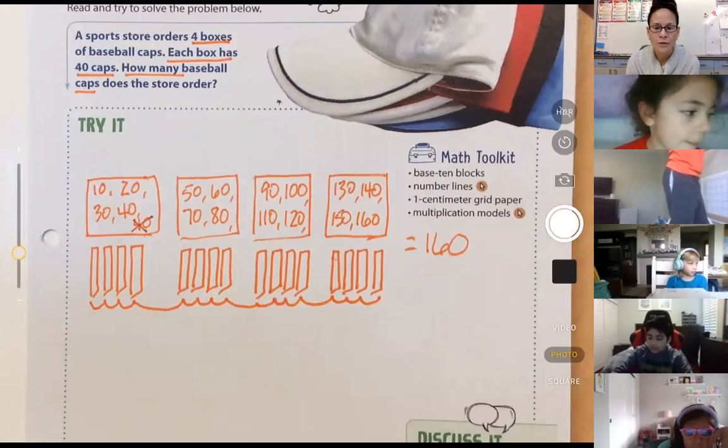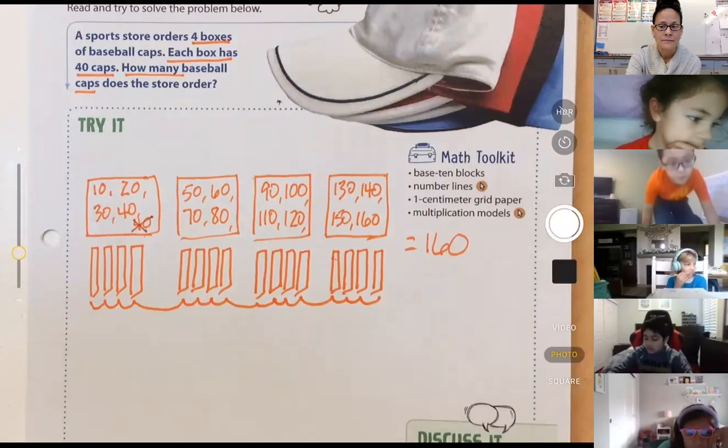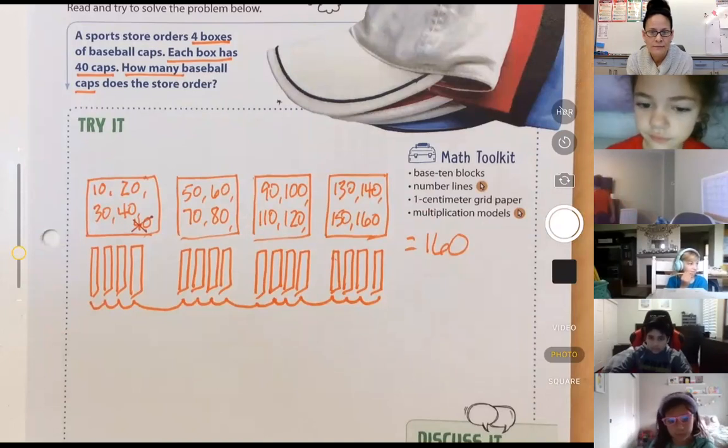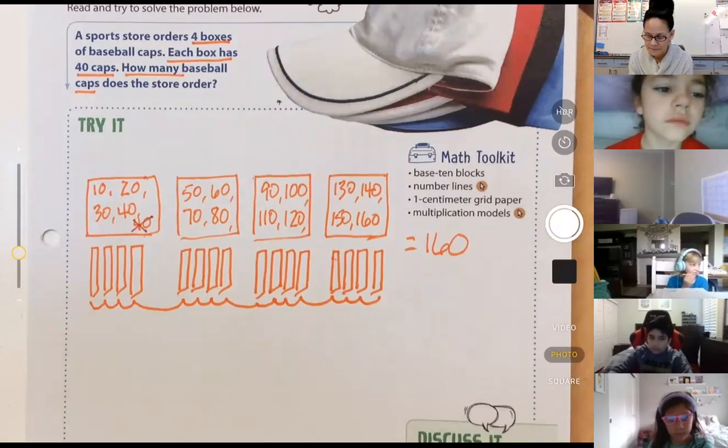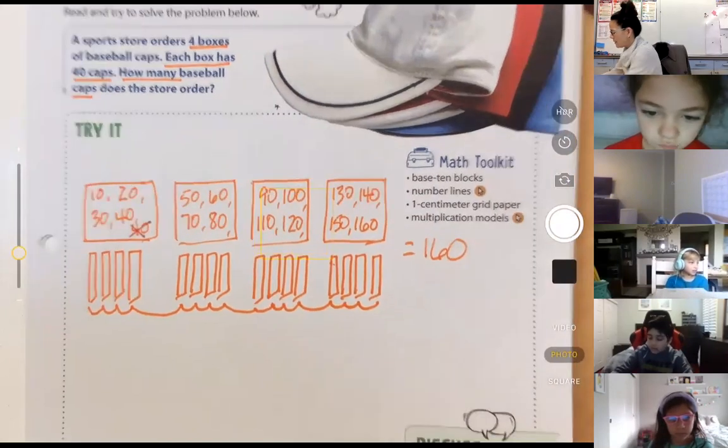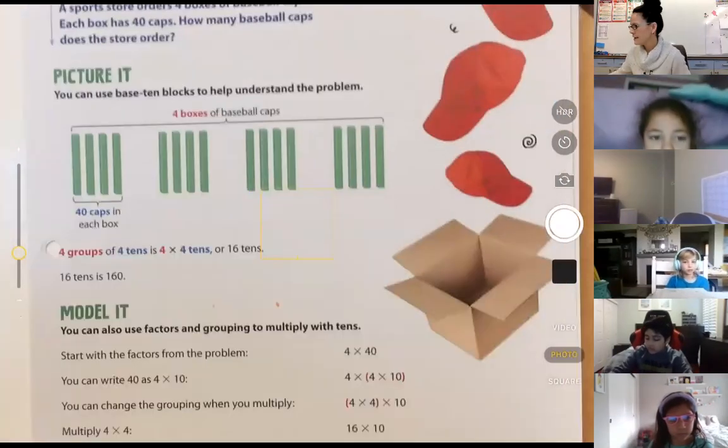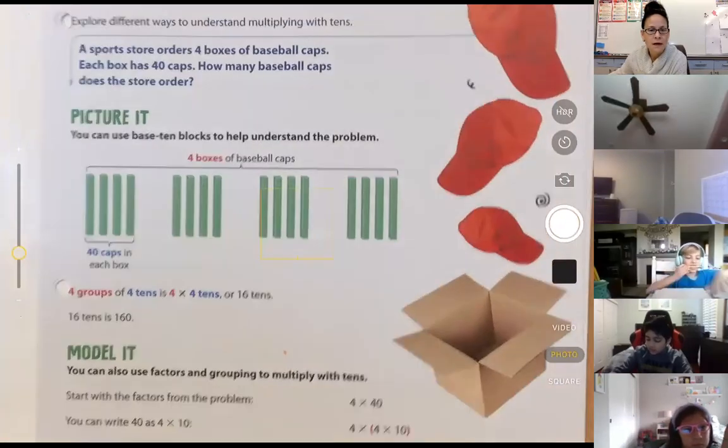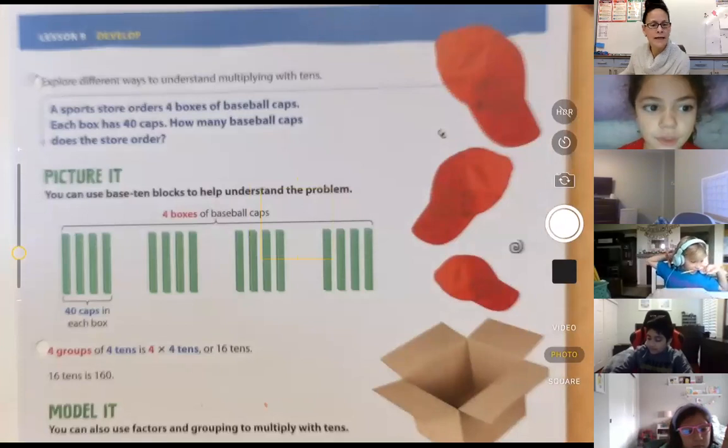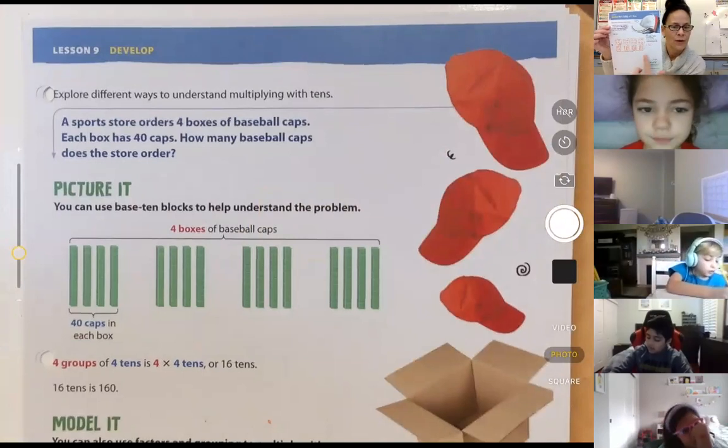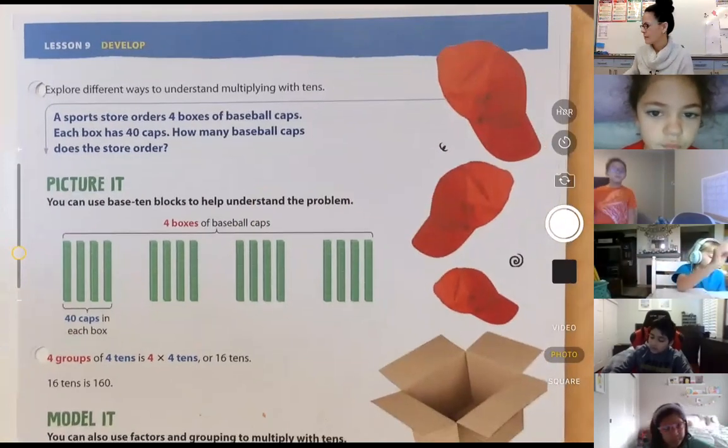So what I would like you to do, actually, I'm going to give you a moment to make sure you get all that written down. Give me a quick thumbs up when you're ready if you have it all written down. Okay. Because I would like you to take a look at the following page, page 216, and you're going to see on page 216 exactly what we did on 215, where we made the models with 10 bars.